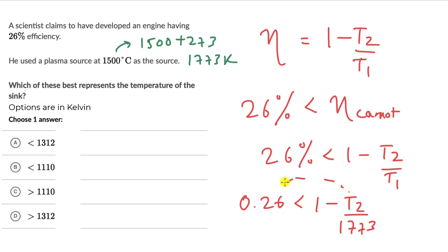Now we can take this to the left-hand side so that it becomes positive. And then when we do that, this is T2 divided by 1773, which is less than 1 minus 0.26. And I encourage you to pause the video and work out this. Just see what is T2 less than. When you do that, you should see that T2 comes out to be less than 1312 kelvins.